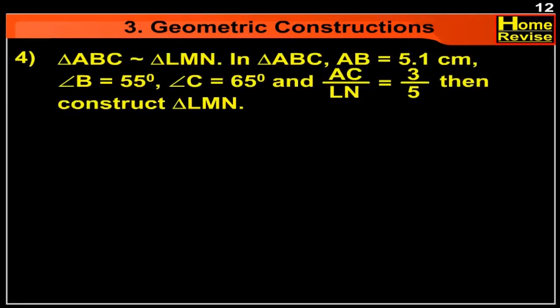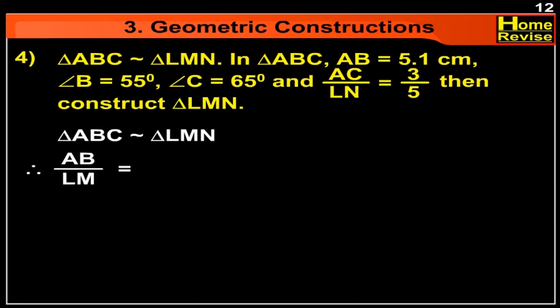Triangle ABC is similar to triangle LMN. In triangle ABC, AB is equal to 5.1 cm, angle B is equal to 55 degrees, angle C is equal to 65 degrees. Construct triangle LMN. Since triangle ABC is similar to triangle LMN, AB upon LM is equal to BC upon MN is equal to AC upon LN, which equals 3 upon 5.